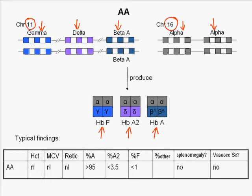In the normal adult, we typically find that more than 95% of the hemoglobin consists of hemoglobin A, with very minor contributions from hemoglobins A2 and F. In order to quantify these hemoglobins, they must be separated by electrophoretic or chromatographic methods.